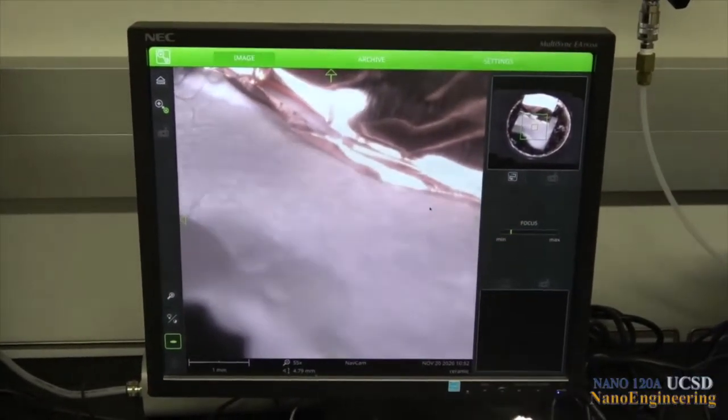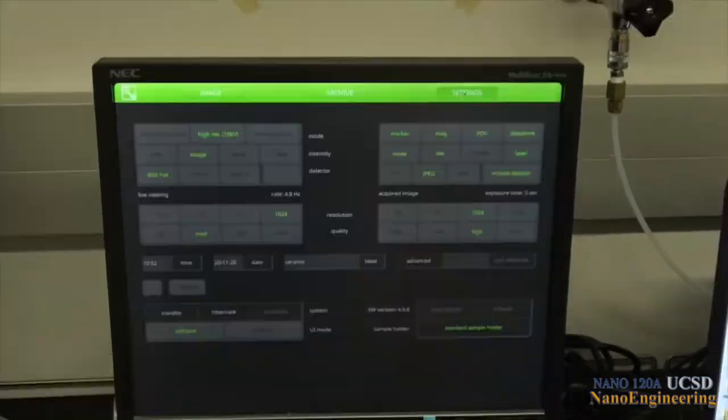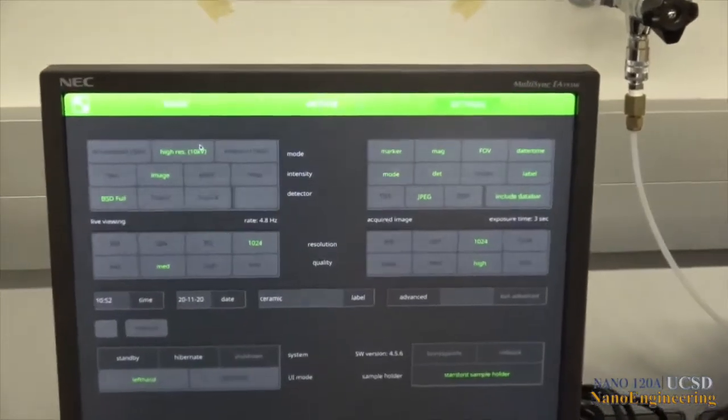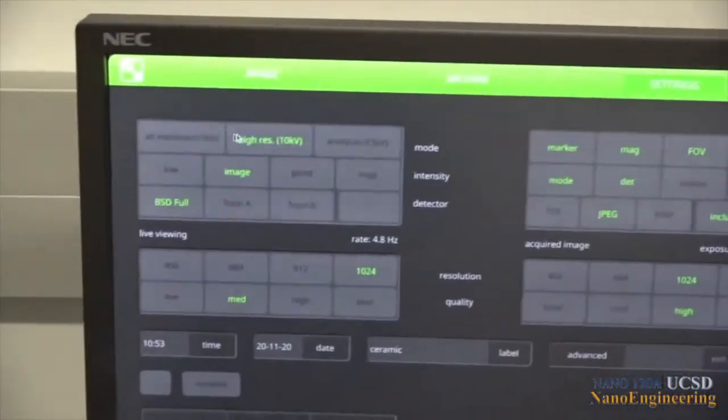At this point, the sample is still not in the scanning electron microscope portion of the chamber. But we can set the conditions for imaging our sample in the SEM by clicking on the settings icon.